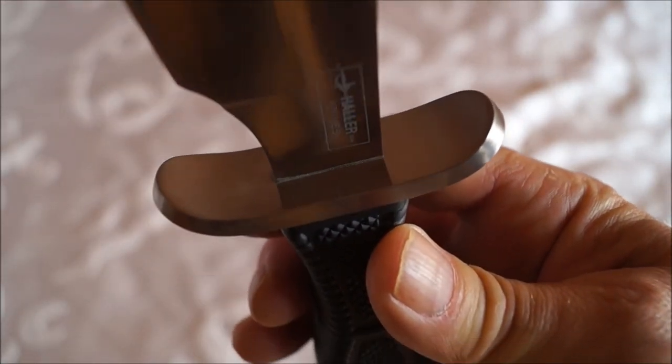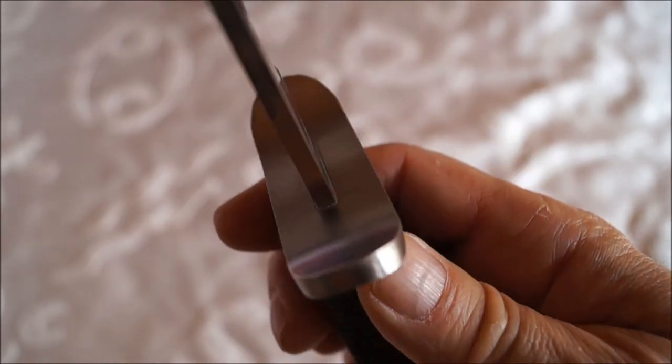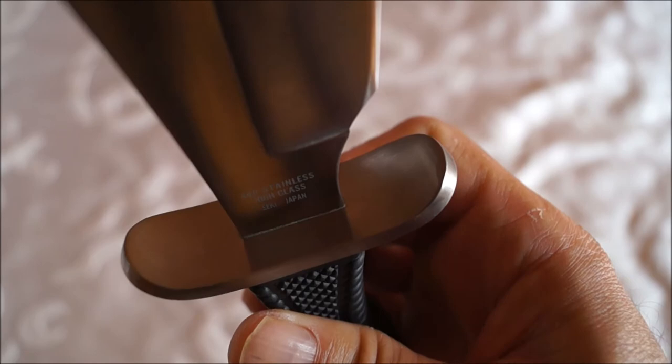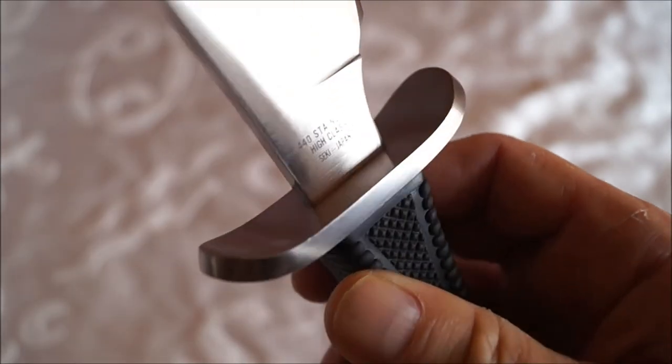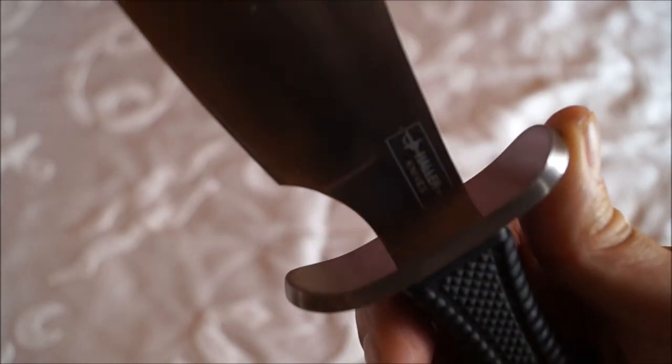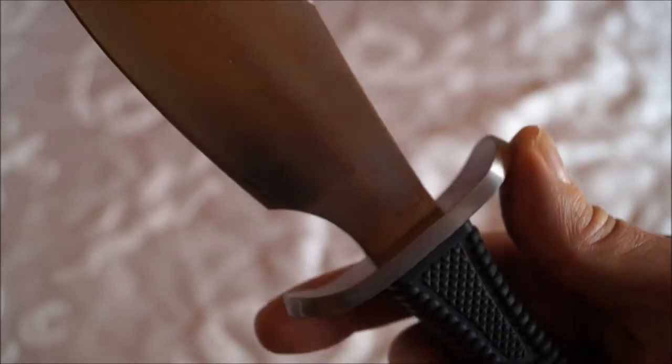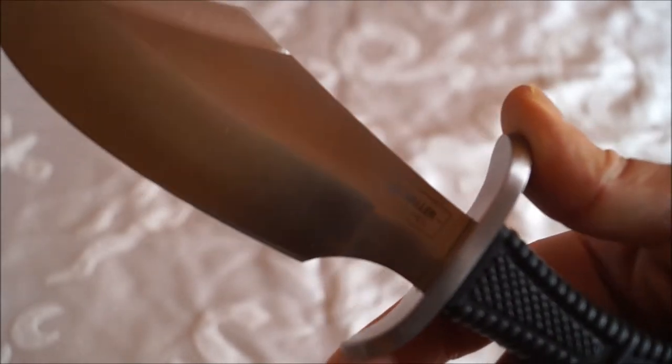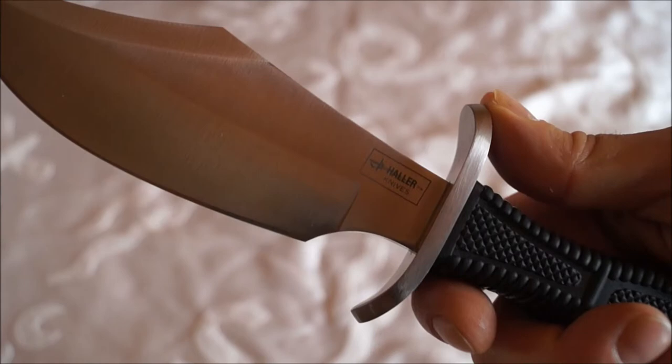Und geht dann über in diesen Handschutz. Der ist 7 cm lang, 2,2 cm breit und 5 mm stark. Hat gerundete Enden und die Enden zeigen hin zur Spitze. Sie sind also leicht nach vorne gebogen.